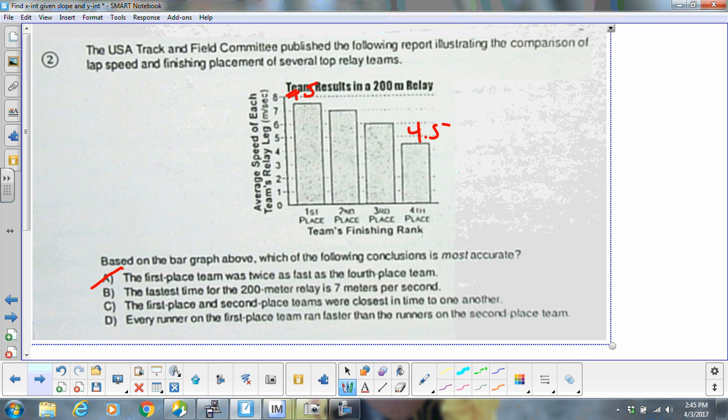Alright, the fastest time for the 200 meter relay is 7 meters per second. And we are somewhere near that, up around in here, but we aren't right on 7, so let's see.